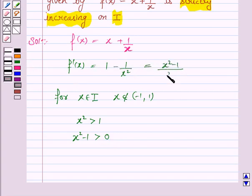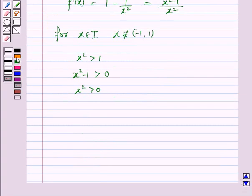And of course x squared is greater than 0 being a perfect square. Therefore, f'(x) which is x squared minus 1 upon x squared is greater than 0.